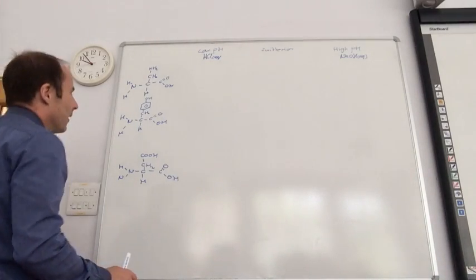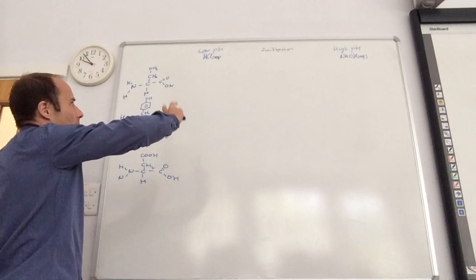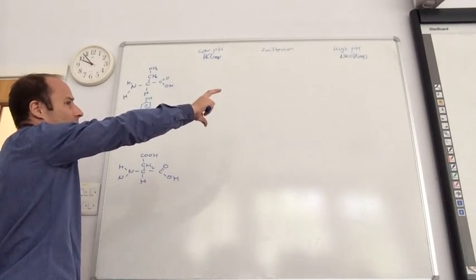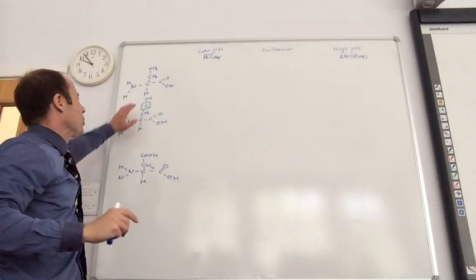It's very unlikely that they'll ask you to draw those three types: the low pH, the zwitterion, and high pH, which is something like glycine. It's far more likely they're going to give you an interesting side chain.